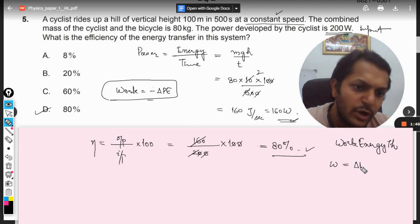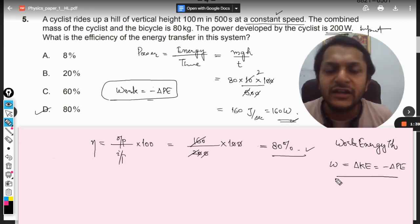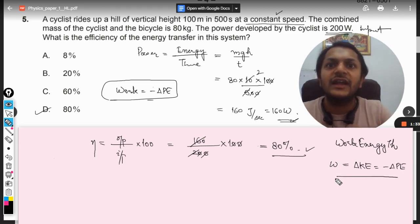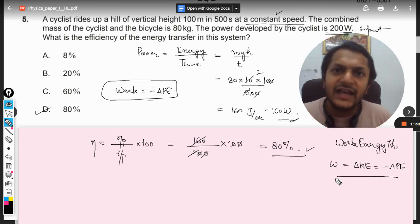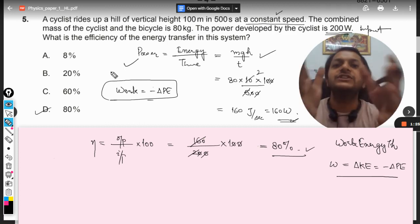Work energy theorem states that work done by the field force, which is gravity here, work done by the gravitation will be equal to the positive change in kinetic energy and the negative change in potential energy. But in this case, because it is moving at a constant speed, so I can say that the change in the kinetic energy is neglected.